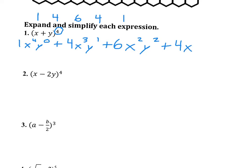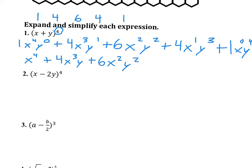Notice the total is always 4 — the total of the exponents is always whatever the exponent is on the binomial. So we've already used 1, 4, and 6. Now we're back to 4. We want x to go down, so that's 1. We want y to go up. Our last coefficient is 1 — we don't want any x's, we want 4 y's. So simplifying: 1·x⁴·y⁰ is just x⁴, plus 4x³y, plus 6x²y², plus 4xy³. We don't need the exponent of 1, and x⁰ is also 1, so all we need in the last term is y⁴.